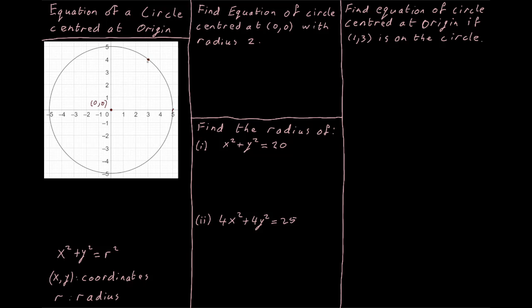We can see that would also be true for a point where we're crossing the grid lines of our page. So if we go in the door 3 and up the stairs 4, and we draw in the radius of our circle at that point, we can see from our coordinates and from drawing in my radius that we have a right-angled triangle with sides of 4 and 3. And if I calculate the hypotenuse of that right-angled triangle, I find that its hypotenuse is 5, by using Pythagoras.